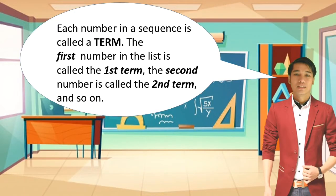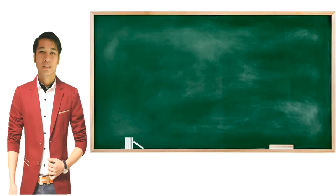Each number in a sequence is called a term. The first number in the list is called the first term, the second number is called the second term, and so on. So bawat numero o bilang sa sequence ay tinatawag na term — ang unang numero ay first term, ang ikalawang numero ay second term, and so on.